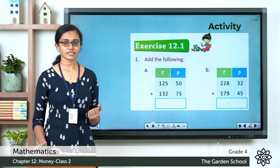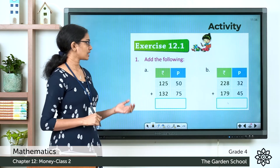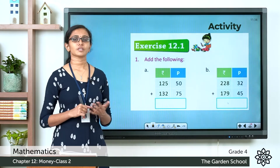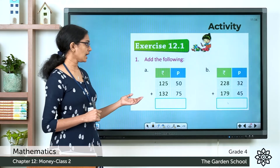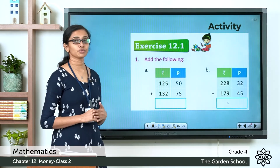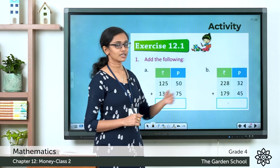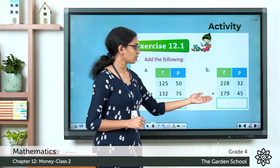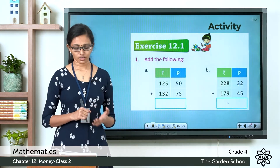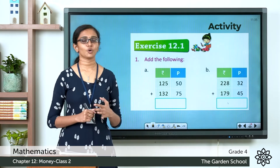Now we'll do an activity from Exercise 12.1 on page 166 — questions a and b of 'Add the following,' question number 1. Question a: add 125 rupees 50 paise and 132 rupees 75 paise. Question b: add 228 rupees 32 paise and 179 rupees 45 paise. Please pause this video, do the two additions in your textbook, and then come back.